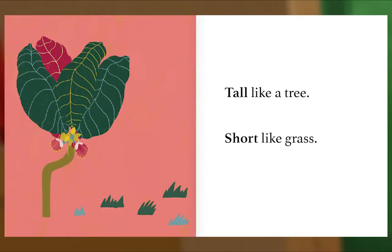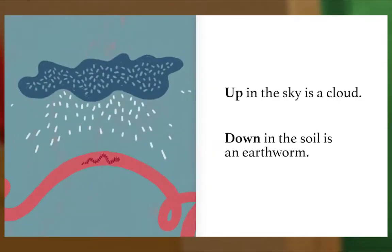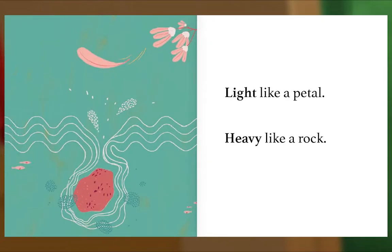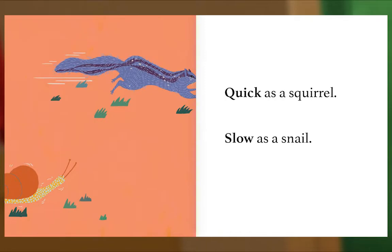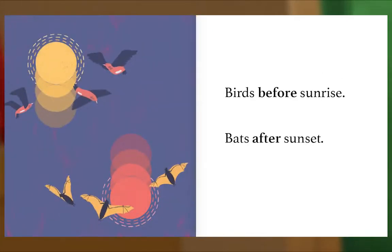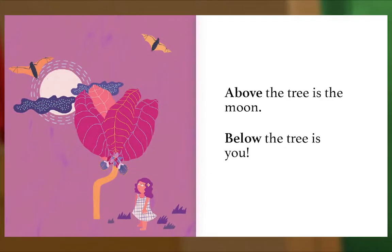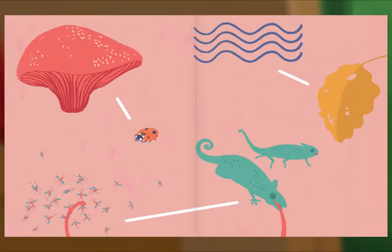Tall like a tree. Short like grass. Up in the sky is a cloud. Down in the soil is an earthworm. Light like a petal. Heavy like a rock. Over the leaf is a caterpillar. Under the leaf is a dragonfly. Quick as a squirrel. Slow as a snail. Birds before sunrise. Bats after sunset. Above the tree is the moon. Below the tree is you. The end.